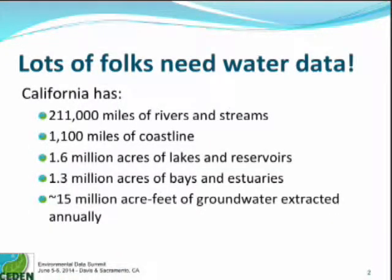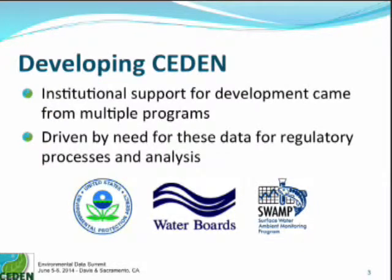Just by way of background, CEDEN is really about ambient water quality data or monitoring data. We have a lot of water in California, despite the fact we're in a drought — at least we usually have a lot of water that we want to monitor. CEDEN was started a number of years ago, actually before I came on board, with support from the EPA, the water boards, and the state surface water ambient monitoring program, or SWAMP. SWAMP has been in existence for quite a while but didn't have a good mechanism for distributing its data, so one part of the motivation of CEDEN was as a vehicle for getting data out there to folks.